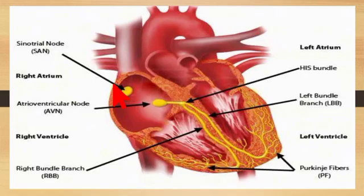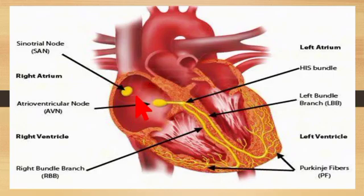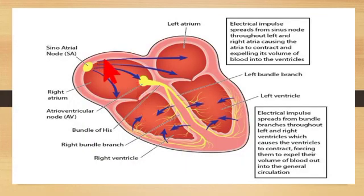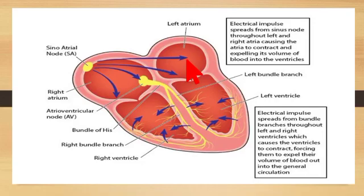Now let's look at a closer view of how the conduction system of the heart works. The sinoatrial node is present at the junction of the vena cava and atria, where the electrical impulse is generated. Each time the sinoatrial node generates a new electrical impulse, that impulse spreads out through the heart's first chambers — the right atrium and the left atrium — stimulating them to contract.